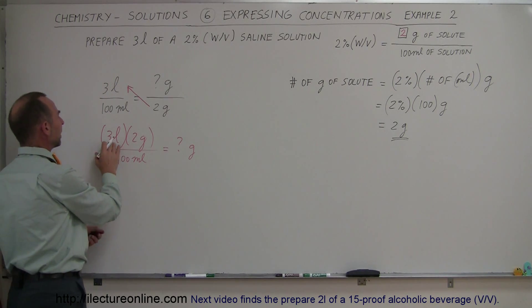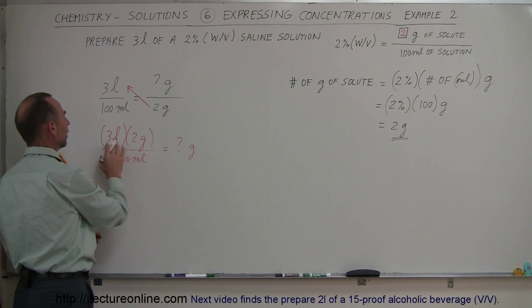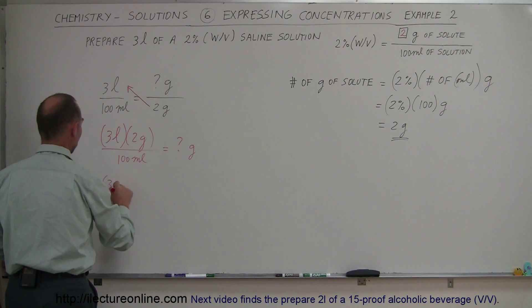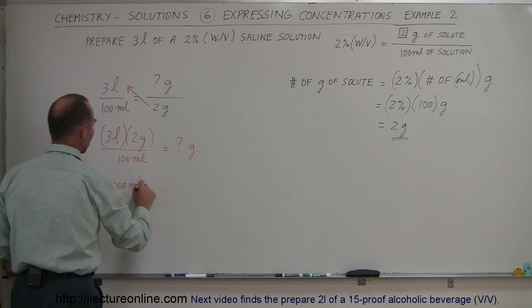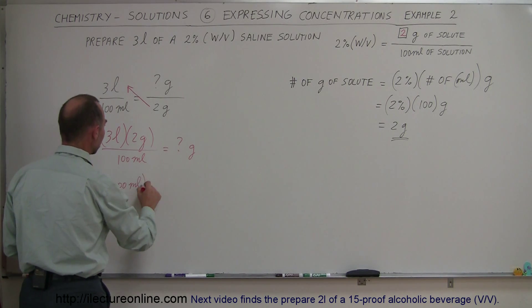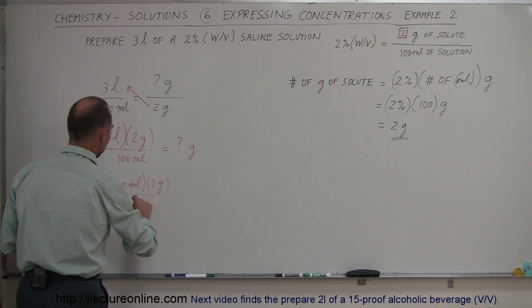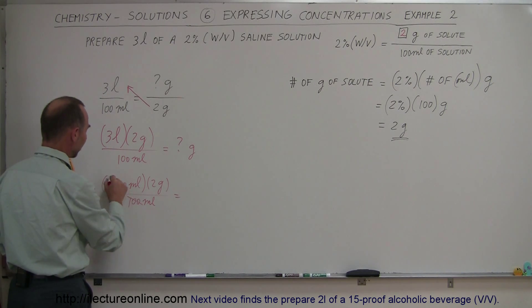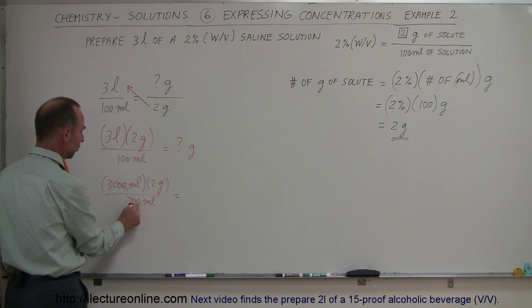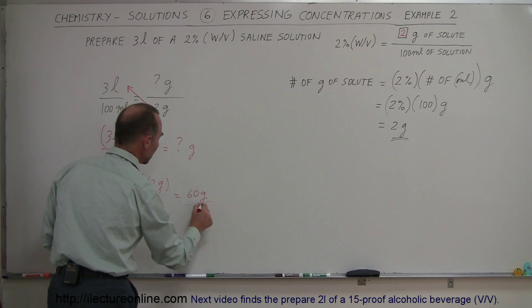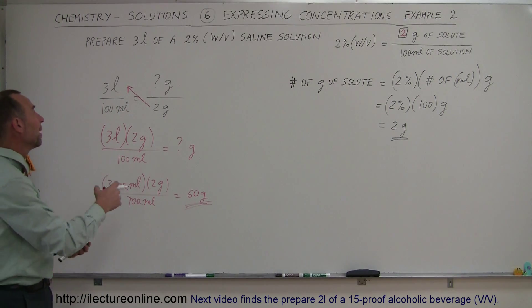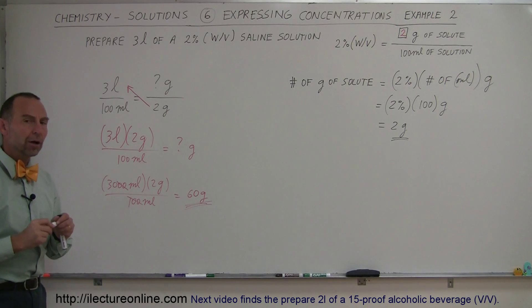Now, of course, we can divide liters by milliliters. We have to realize that liters can be converted to milliliters, which is 3,000. So this is equal to 3,000 milliliters because 1 liter is 1,000 milliliters times 2 grams divided by 100 milliliters. Now notice that this is a ratio of 30 to 1 because these two zeros cancel out those two zeros. So 30 times 2 is 60 grams, which means we need 60 grams of the salt added to the solution to make up 3 liters of the solution.